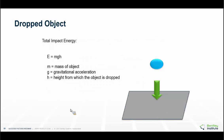A dropped object analysis is very similar to a ship impact in that we have to ensure the structure or object being impacted can absorb all the kinetic energy from the actual impact. That's a very simple formula based on mass, gravitation, and the height of the object.